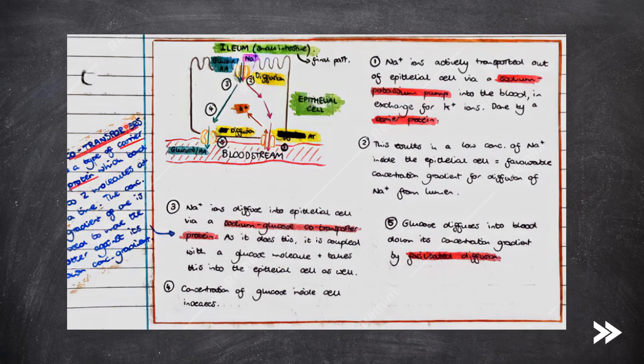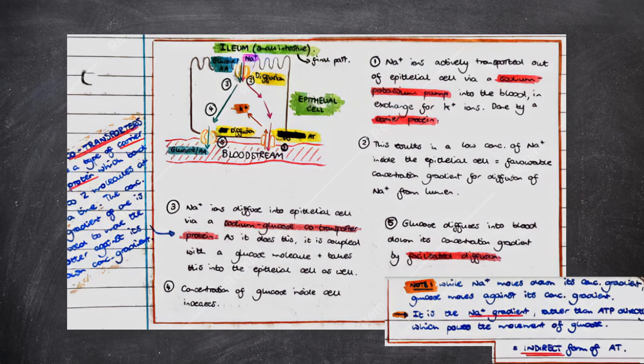Note that co-transporter proteins are types of carrier proteins which bind to two molecules at the same time. The concentration gradient of one, in this case sodium, is used to move the other, which is in this case glucose, against its concentration gradient. Just to summarize, while Na+ moves down its concentration gradient, glucose moves against its concentration gradient. However, it is the Na+ gradient, rather than ATP directly, which powers the movement of glucose. And therefore, this is known as an indirect form of active transport.